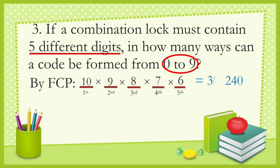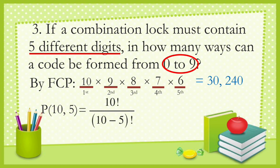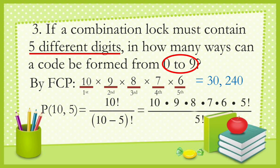Using the formula, that is P(10, 5) equals 10 factorial all over (10 minus 5) factorial, which equals 10 × 9 × 8 × 7 × 6 × 5 factorial all over 5 factorial. The 5 factorials cancel, giving a result of 30,240.